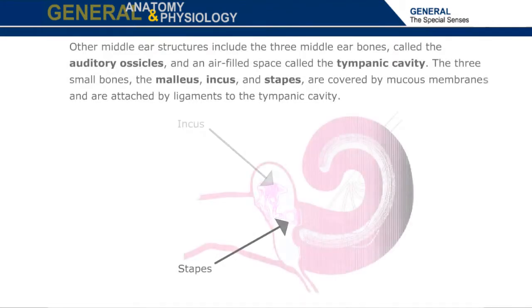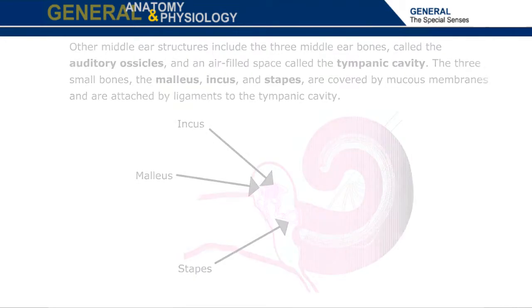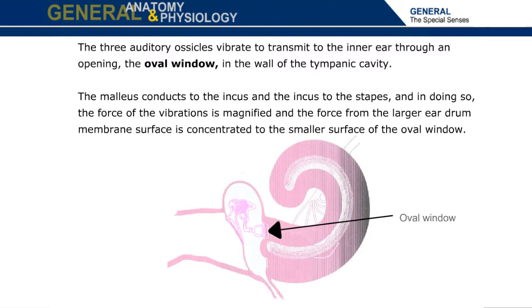Other middle ear structures include the three middle ear bones, called the auditory ossicles, and an air-filled space called the tympanic cavity. The three small bones — the malleus, incus, and stapes — are covered by mucous membranes and are attached by ligaments to the tympanic cavity. The three auditory ossicles vibrate to transmit to the inner ear through an opening, the oval window, in the wall of the tympanic cavity.